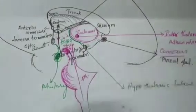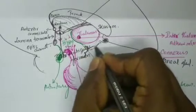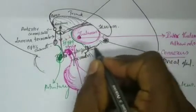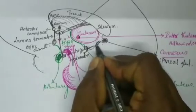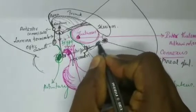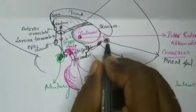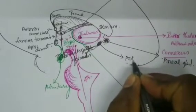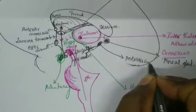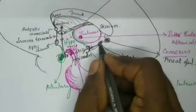You can see the two colliculi — the superior colliculus and the inferior colliculus. Between the colliculi and the pineal gland we have the posterior commissure. So posteriorly, the third ventricle is bounded by the pineal gland and then the posterior commissure.